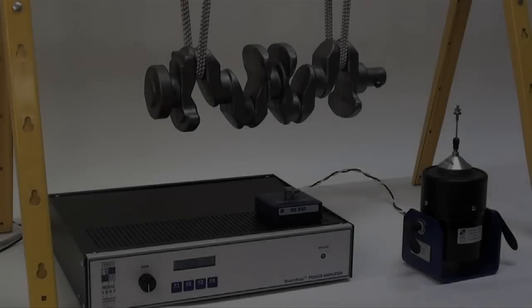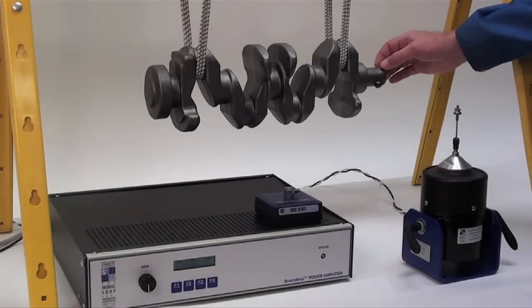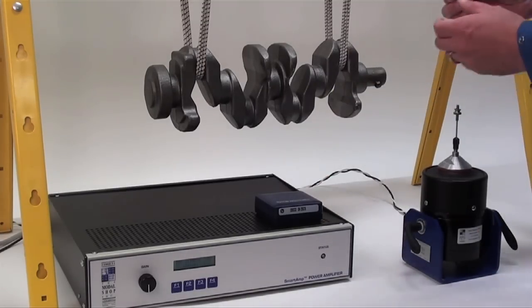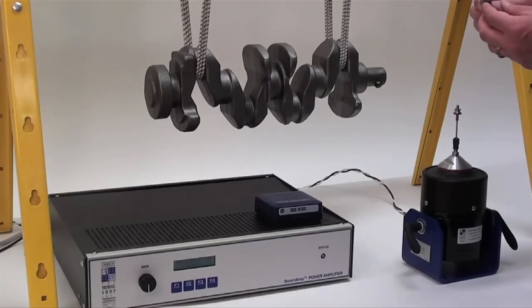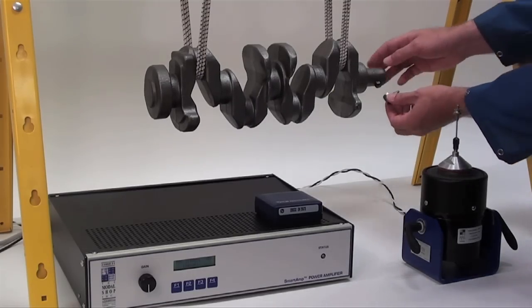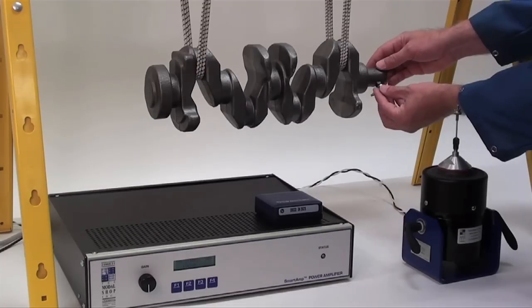Now we have attached the mounting base to the test article, and we've allowed some time for the epoxy to set, and we're ready to mount the load cell. And this is a standard 208 CO2, and the load cell threads onto the mounting base with the 1032 stud.